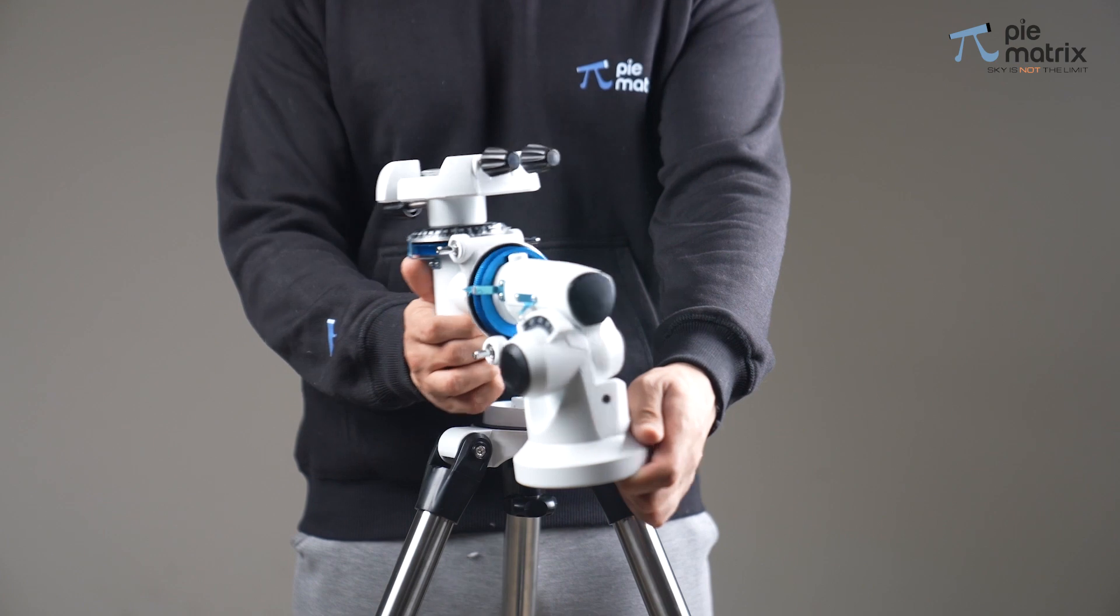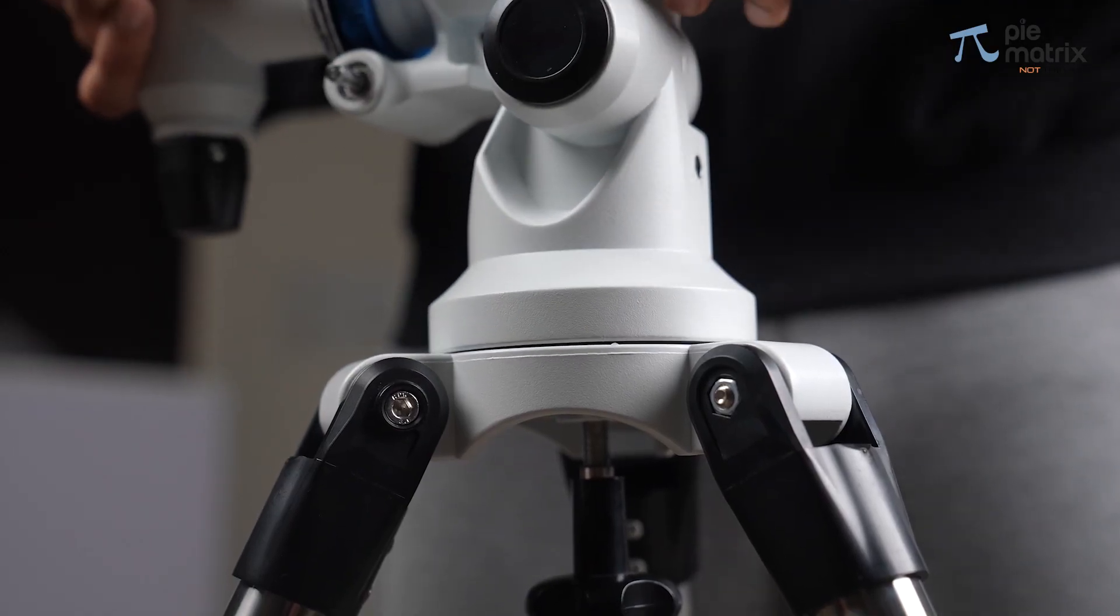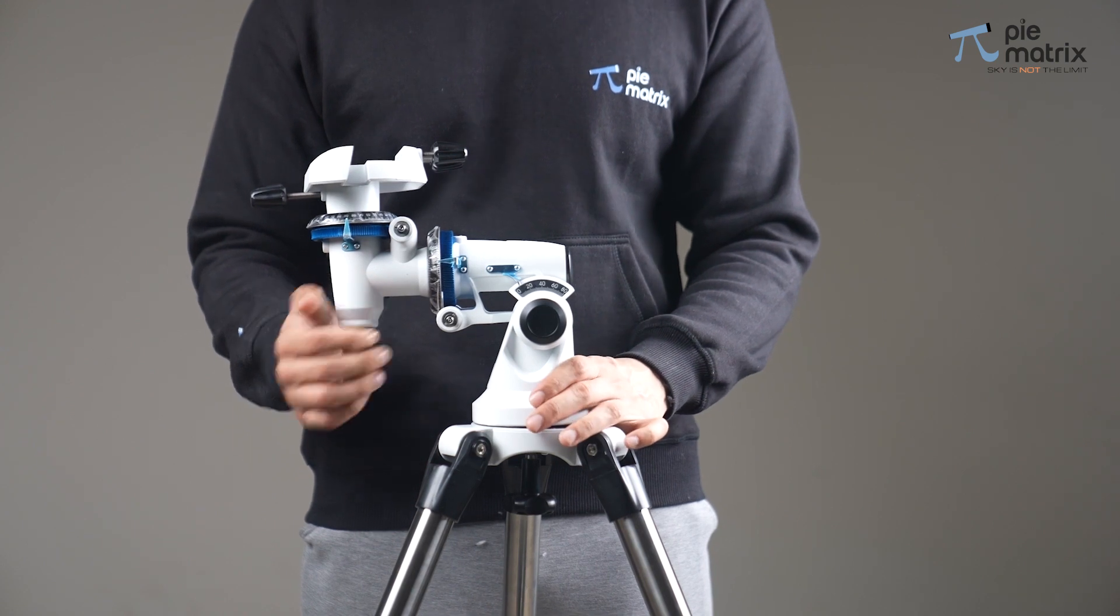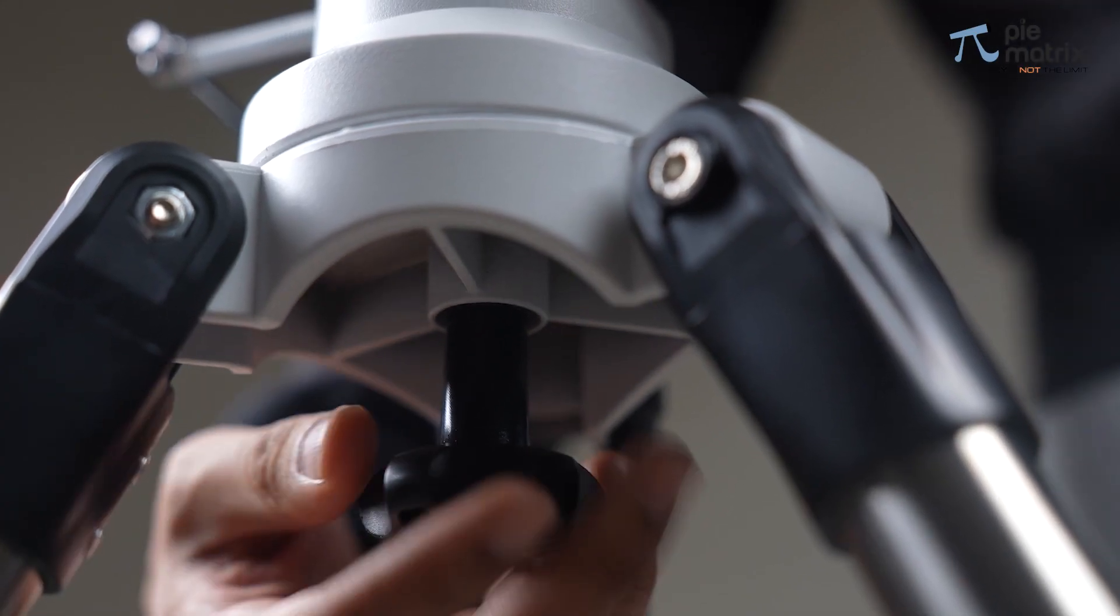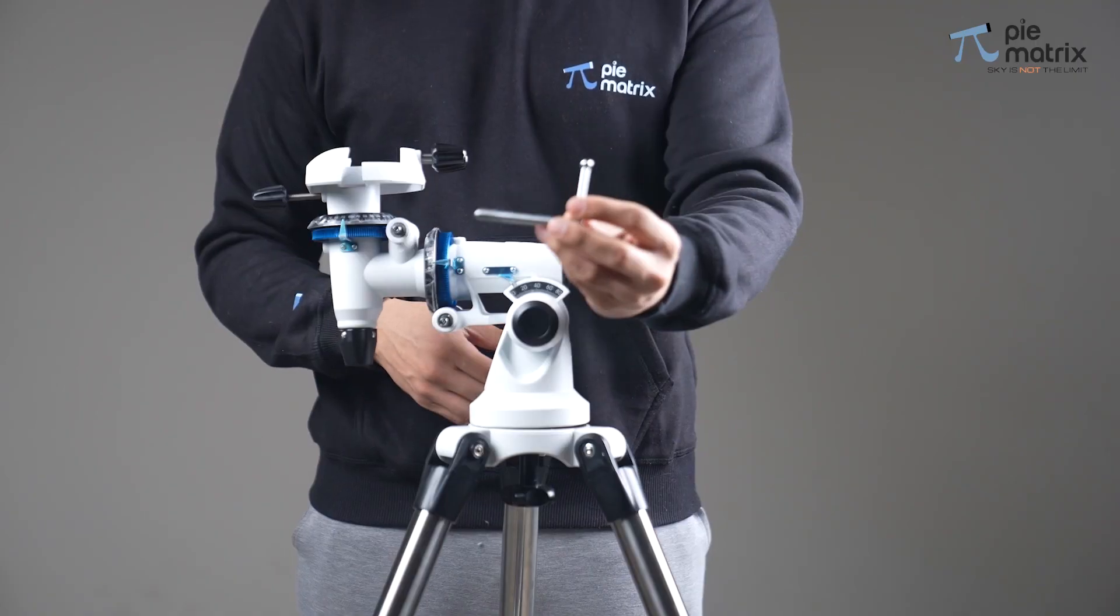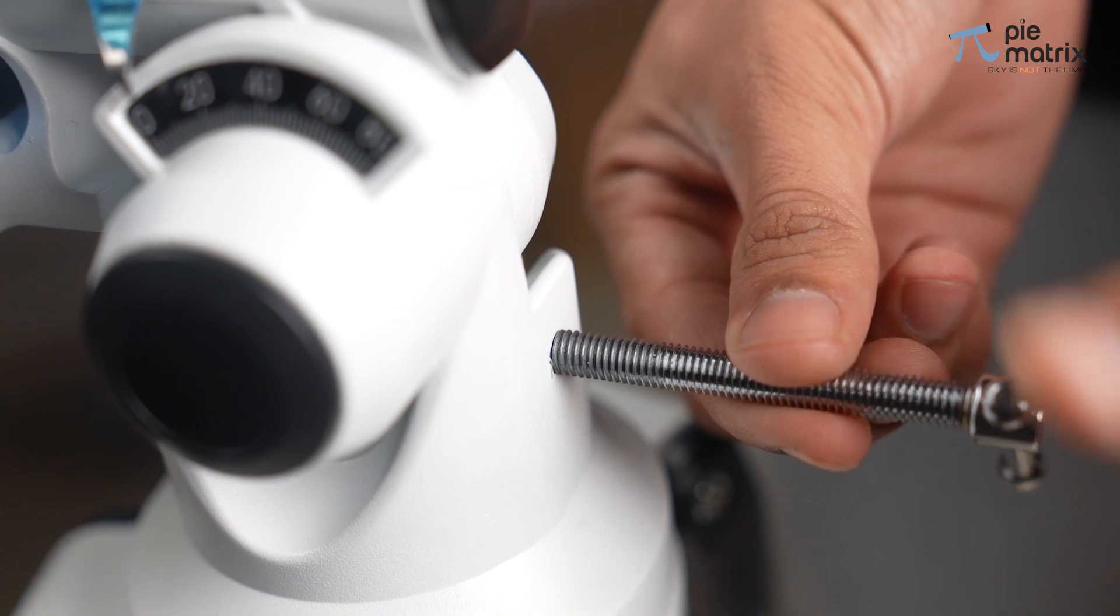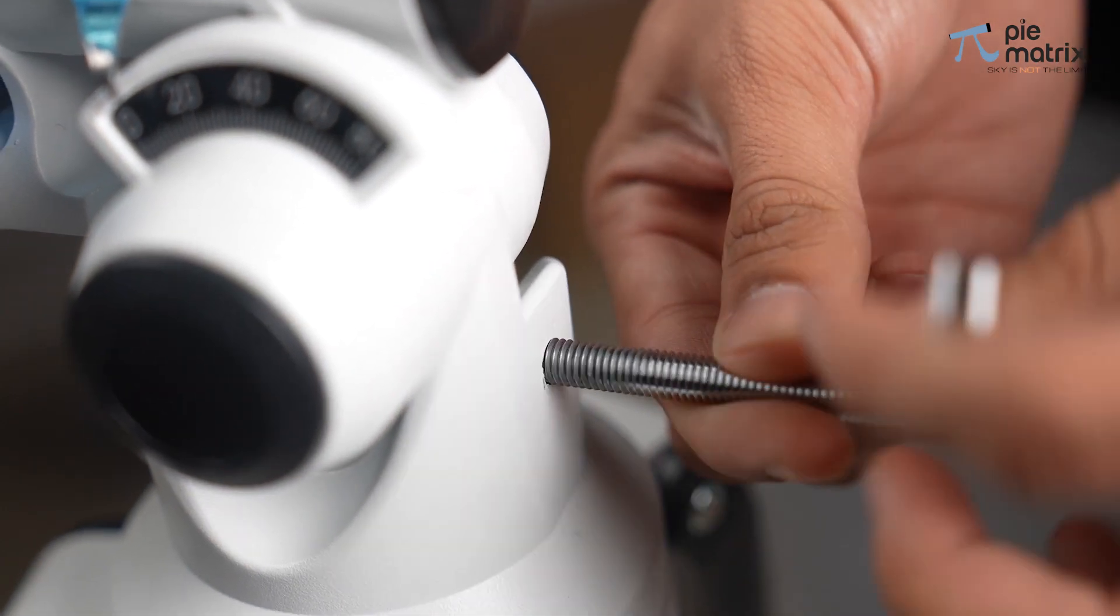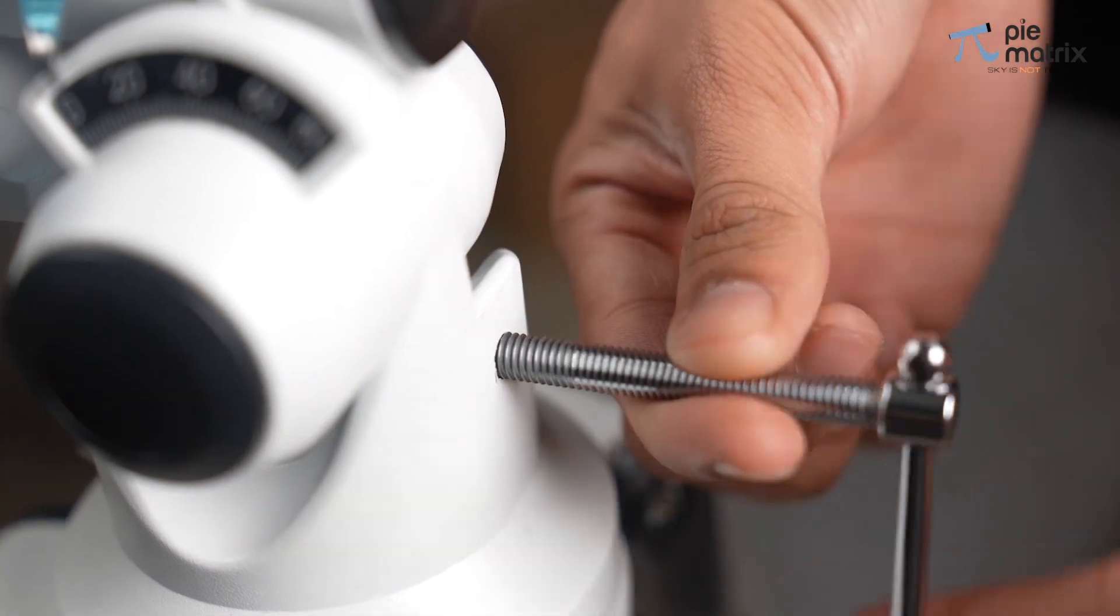Now we fix the equatorial mount on the tripod. Carefully place it over the bracket and tighten it using the screw attached below. Then insert the T-bolt into the holes situated at one end of it. Adjust the latitude of the setup according to your geographical location by tightening the bolt.